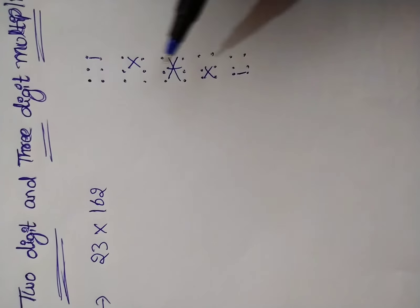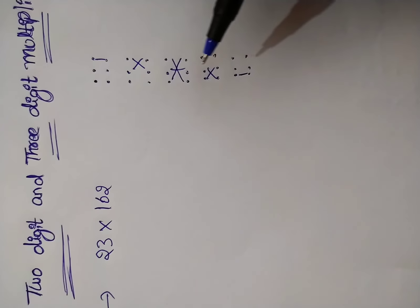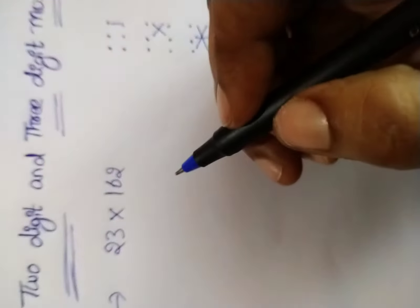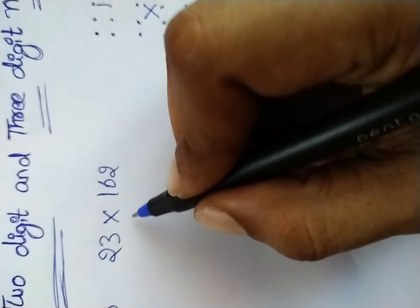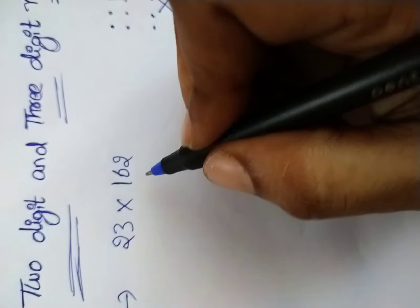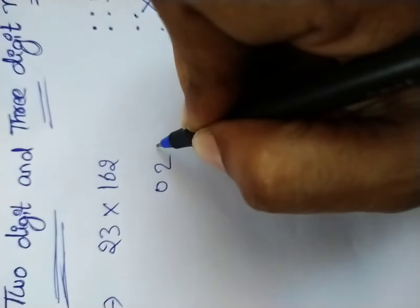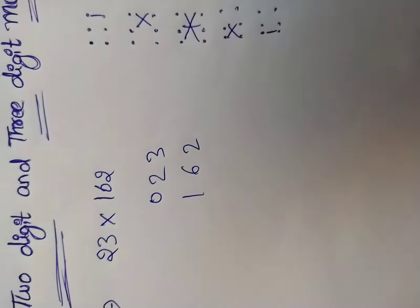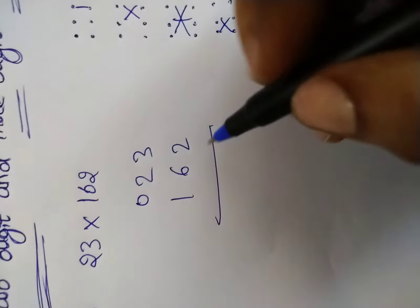We will do the multiplication process as shown in previous videos. We will do all the rows here. We will follow the 3 digits. This will be very simple.